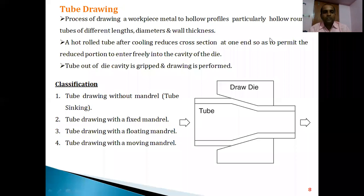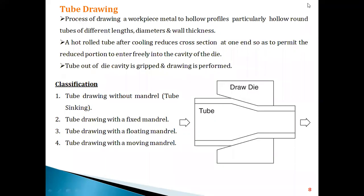As I was telling you, we discussed drawing in the previous sessions — the procedure, mechanism, and other things. Now we will be discussing what is tube drawing and the classifications for tube drawing in detail. Drawing is a metal forming process where a workpiece is pulled through a die to reduce the cross-section. Similarly, in tube drawing, we use this especially when we want to develop hollow profiles.